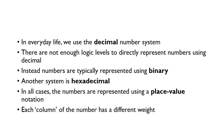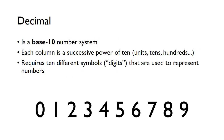Each column of a number has a different weight. Decimal is a base 10 number system, which probably comes about because we've got 10 fingers, making it easier to count. Each column in a number is a successive power of 10 — units, tens, hundreds, and so on. Because it's a base 10 system, we need 10 different symbols which we call digits, from zero up to nine.